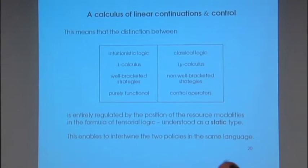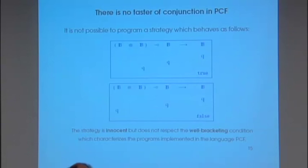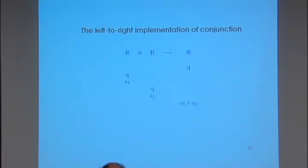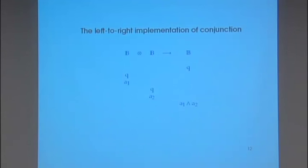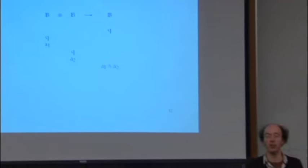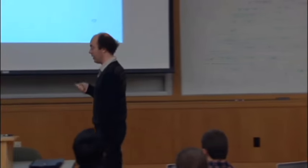This is the idea of these two Booleans: depending on which Boolean you use, you can have this program or not. The distinction is: intuitionistic logic, lambda calculus, well-bracketed strategies, purely functional — versus classical logic, lambda-mu calculus, non-well-bracketed strategies, and control operators. All this is regulated by this modality — it has to do with linearity constraints. We cannot use control because we are forced to play without a garbage collector to remove the dirty things we leave. And from that it becomes possible to mix the two, so that some types allow control and others do not. It's not because we're working in big languages — it's because our types are not sufficiently expressive.